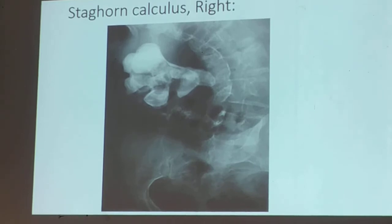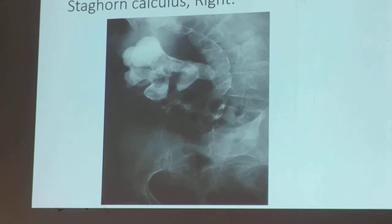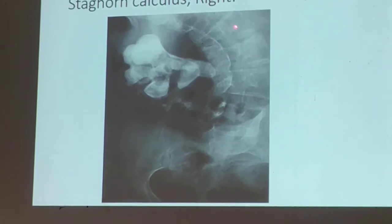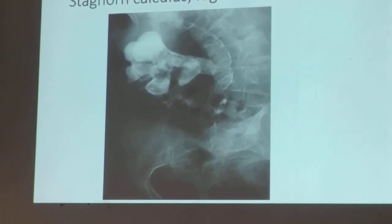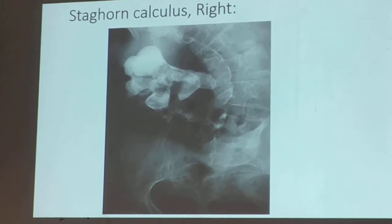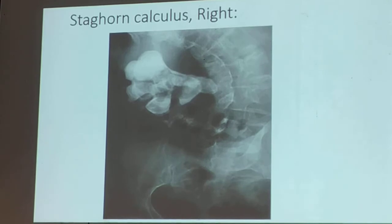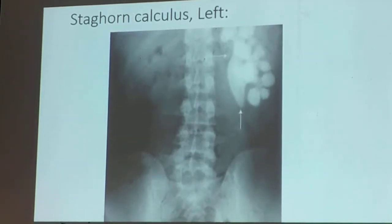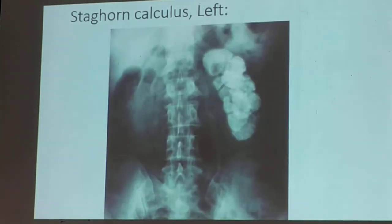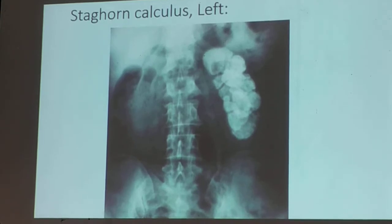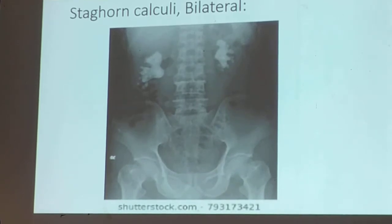Aside from the staghorn calculus, what did you notice? The vertebra — the patient has kyphosis. But what is significant here is the staghorn calculus of the right kidney. This one is also a staghorn calculus on the left kidney. This is a staghorn calculus — bilateral, left and right.